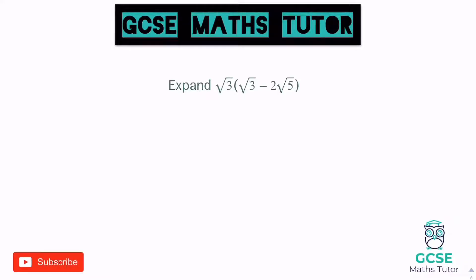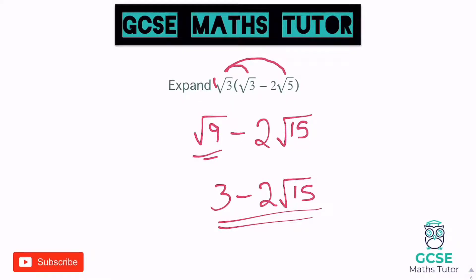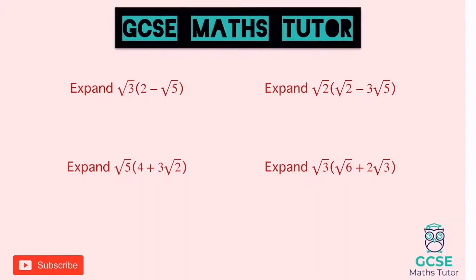Okay, let's look at another one. √3 times √3 is √9, which is 3. Copy that symbol — minus. Then √3 times 2√5: remember there's a 1 at the front, so 1 times 2 is 2, and √3 times √5 is √15. So we have 3 minus 2√15, and √15 does not simplify. Slight differences in these questions but just applying those same multiplication skills. I've got four more questions for you to have a go at — please do pause the video.